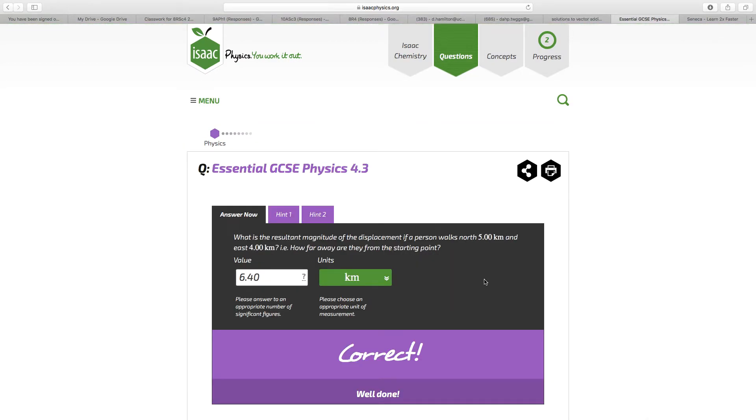4.3, what is the resultant magnitude of the displacement, if a person walks 5 kilometers north and 4 kilometers east, so that's 5 north, 4 east. You want the hypotenuse of that triangle, so if you do the square root of 5 squared plus 4 squared, that gives you 6.4.